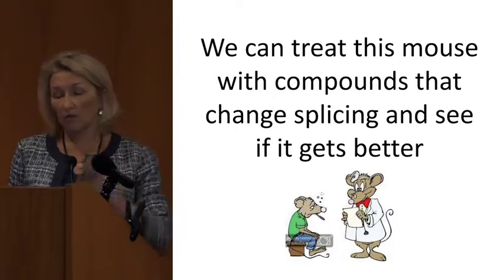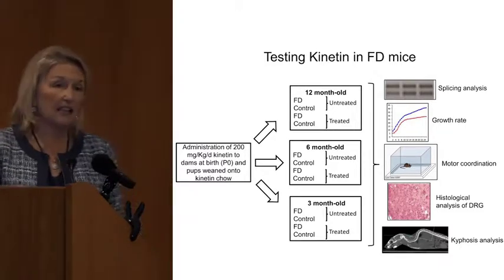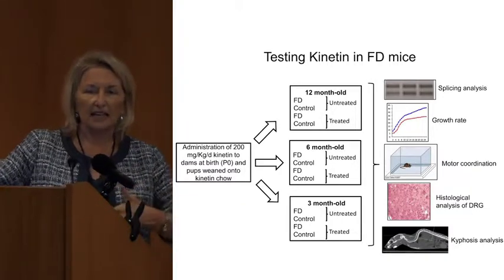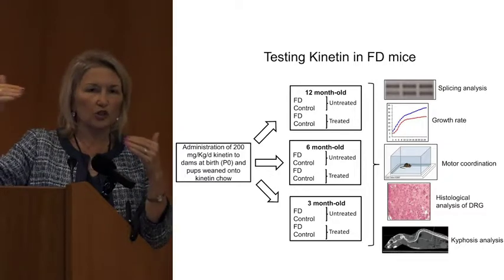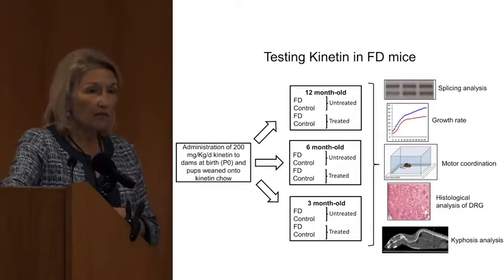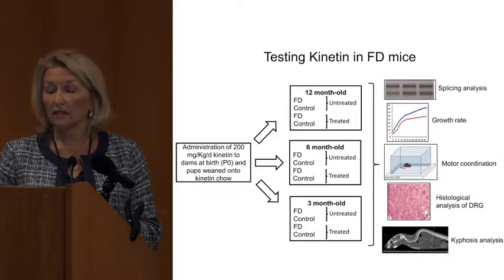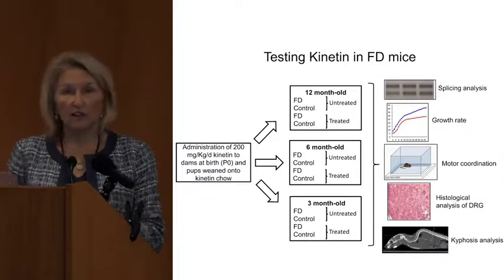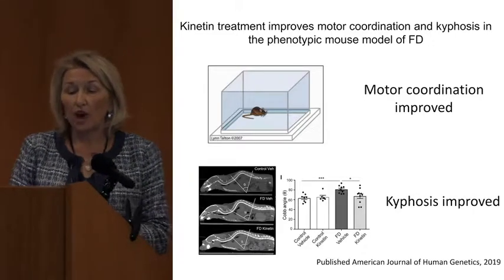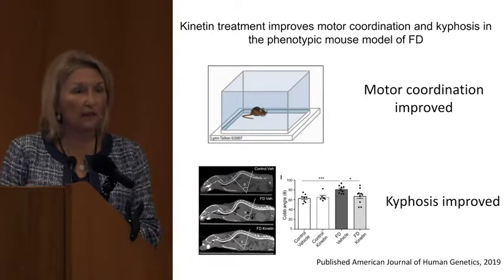This project was led by Elisabetta in the lab. What we did was we tested Kinetin — you've heard us talk a lot about Kinetin over the years. It is a compound that we identified in 2005 as a way to modify splicing. Basically what we're doing is increasing the amount of the message, or the RNA, that can give appropriate instructions to make protein. We fed the mice Kinetin and then asked: does it fix the splicing? Does it help them grow better? What does it do to motor coordination? And we looked at the neurons. This paper was just published this year, a few months ago, showing that when we treated these mice with Kinetin, we can improve motor coordination and kyphosis in this mouse model.